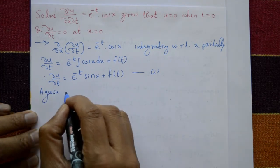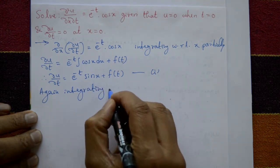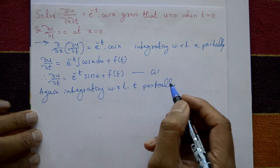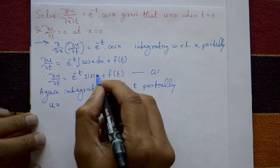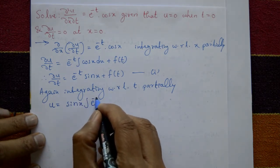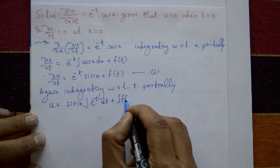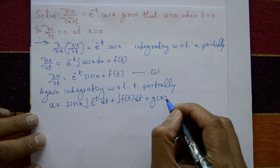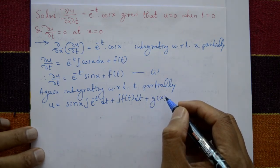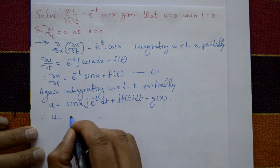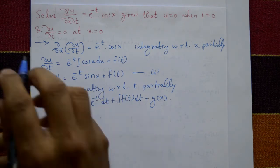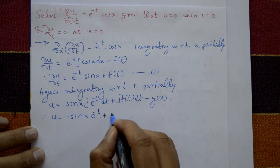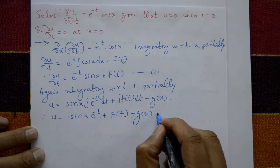Again integrating with respect to t partially, treating x as a constant. After integration, u = sin(x)·∫e^(-t)dt + ∫f(t)dt + g(x), where g(x) is an arbitrary function of x. Therefore u = sin(x)·(−e^(-t)) + F(t) + g(x). This is equation number 2, where F(t) = ∫f(t)dt.